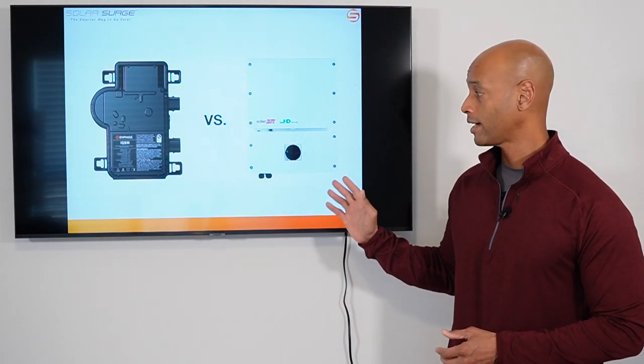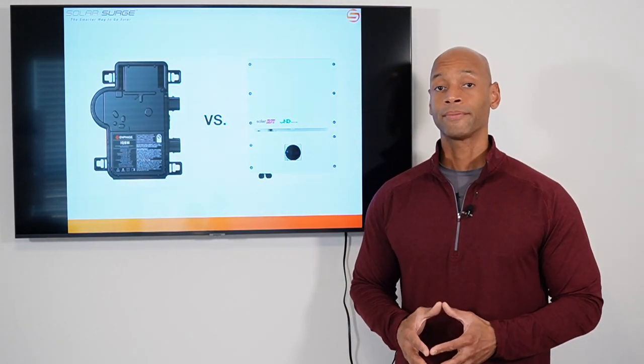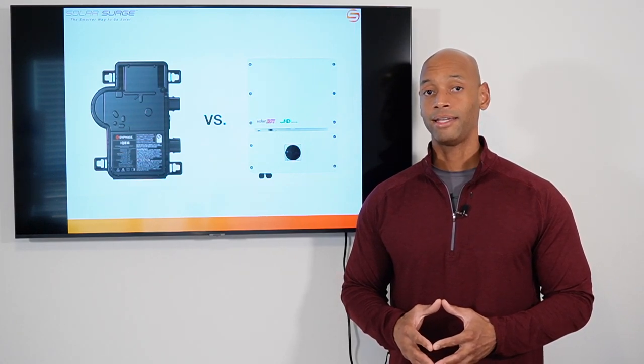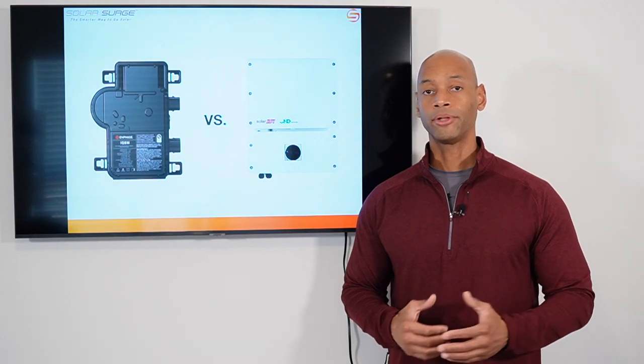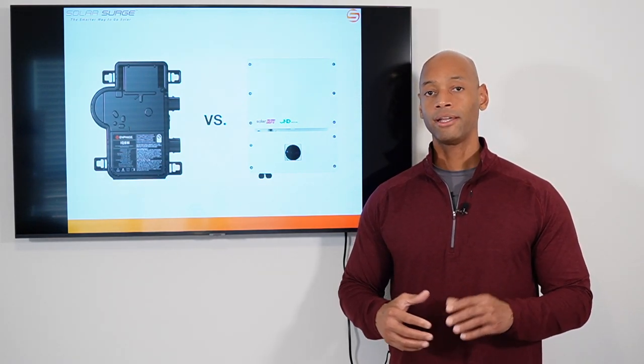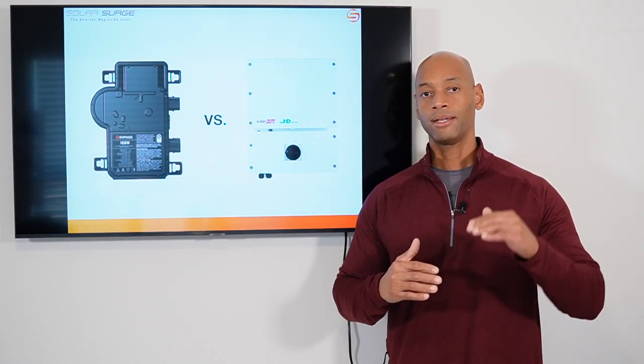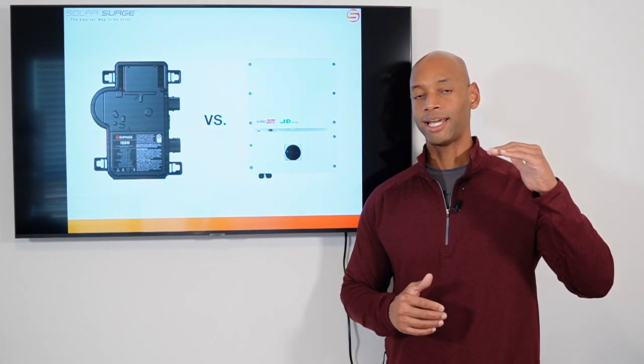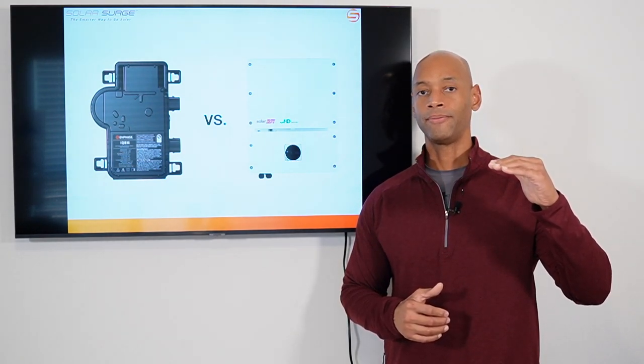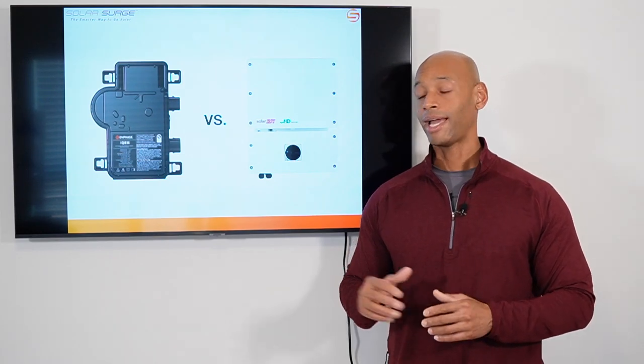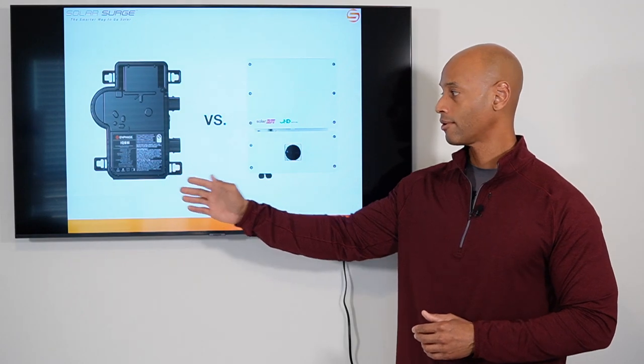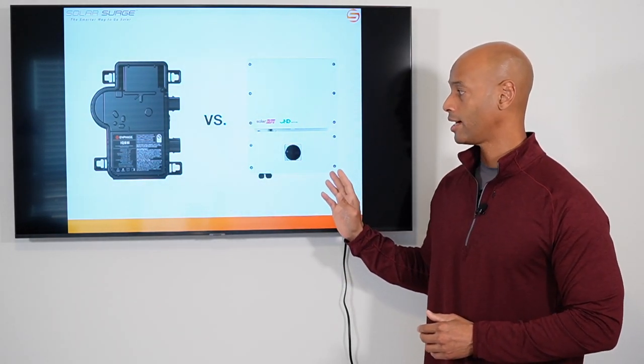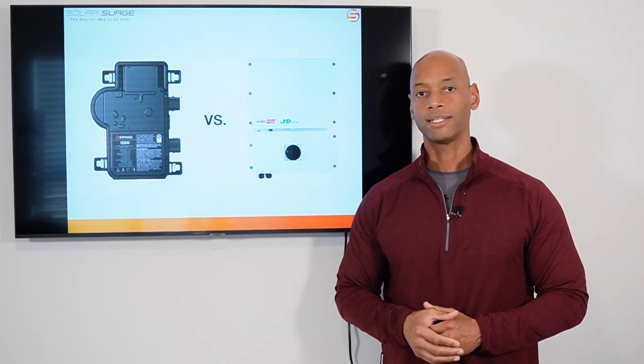However, the SolarEdge does have another advantage and that is in the area of clipping loss. Now for those of you unfamiliar with clipping loss, generally there's going to be a difference between the ideal test conditions DC rating of your solar panel and then the actual AC output rating of your inverter system, whether you're talking microinverter for each panel or a central inverter to convert for the entire system.